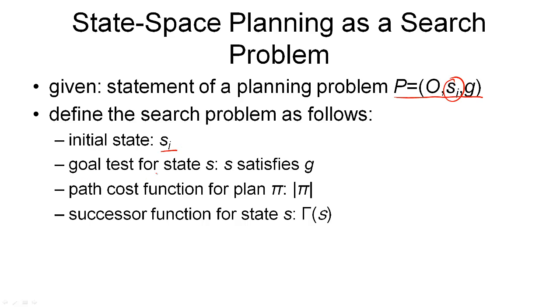Then we need a goal for our search problem and we define a goal test here. Namely, the test that S satisfies G. So the state that we're currently searching must satisfy the goal. Then we can define a path cost function for our search and that is simply the length of the plan we're currently looking at.